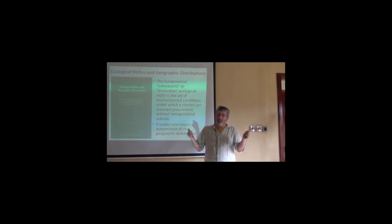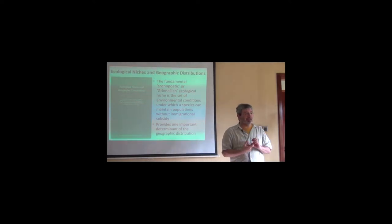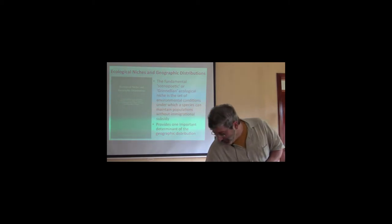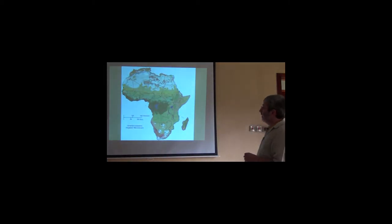So, we're talking about some set of conditions that are right for the species. And all conditions outside of that set, the species either can't live there, can't survive there, or can't maintain populations there. And so, the ecological niche provides one important determinant on geographic distributions.